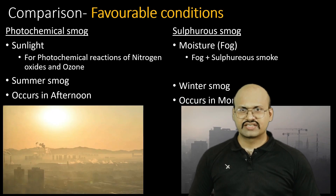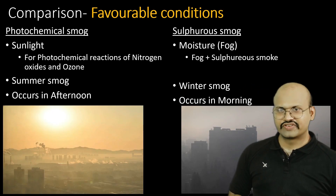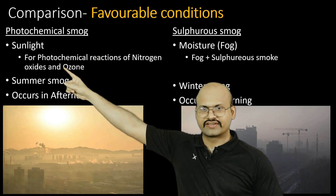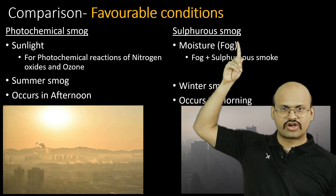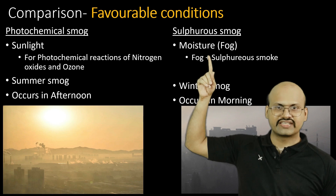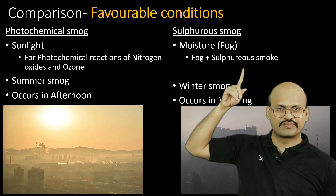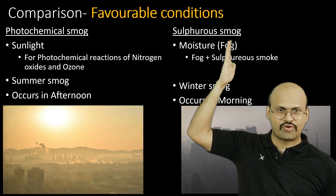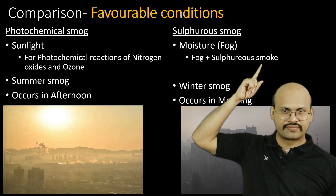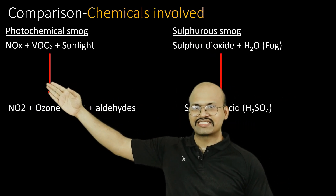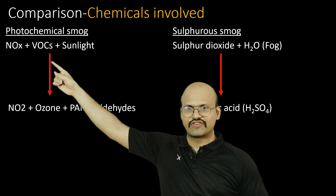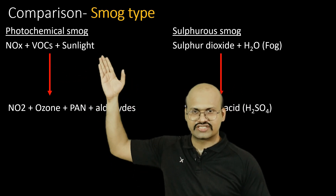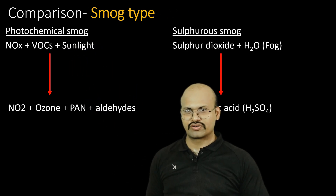The next category is favorable conditions. Photochemical smog requires sunlight, while sulfurous smog requires moisture. Sulfurous smog is a combination of sulfurous smoke and fog. For photochemical smog, it is sunlight which causes photodissociation and drives the reactions, so no smoke is required.